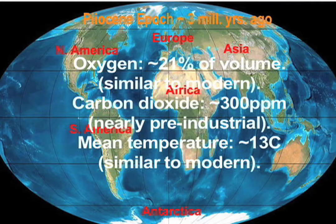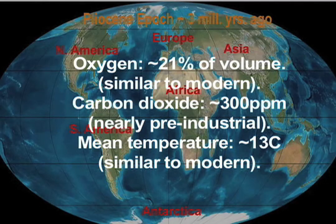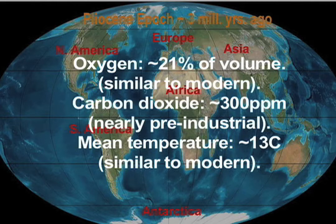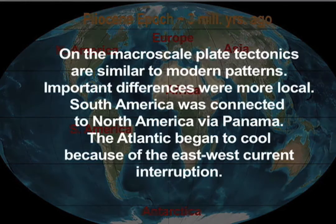Oxygen: about 21% of volume, similar to modern. Carbon dioxide: about 300 parts per million, nearly pre-industrial. Mean temperature: about 13 degrees centigrade, similar to modern.